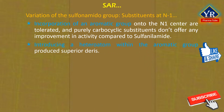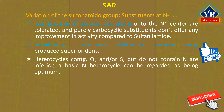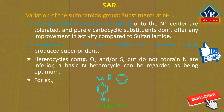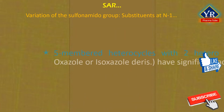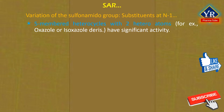Introducing a heteroatom within the aromatic group produced superior derivatives. In this context, nitrogen-containing heterocycles are particularly attractive substituents in that not only can potency be enhanced, but elimination half-life can often be extended. In addition, tissue distribution and absorption can be greatly altered depending upon the particular heterocycle present as well as substituents emanating from the ring. Other heterocyclic systems that contain oxygen and/or sulfur but do not contain nitrogen are inferior derivatives. A basic nitrogen heterocycle can be regarded as being optimum.